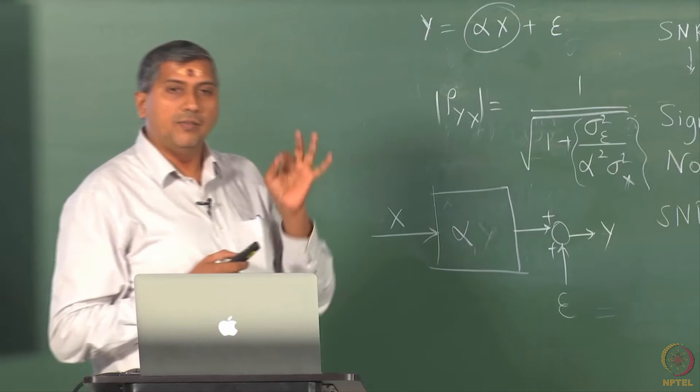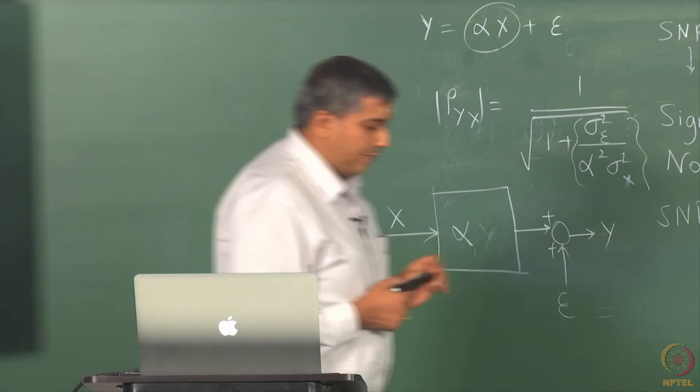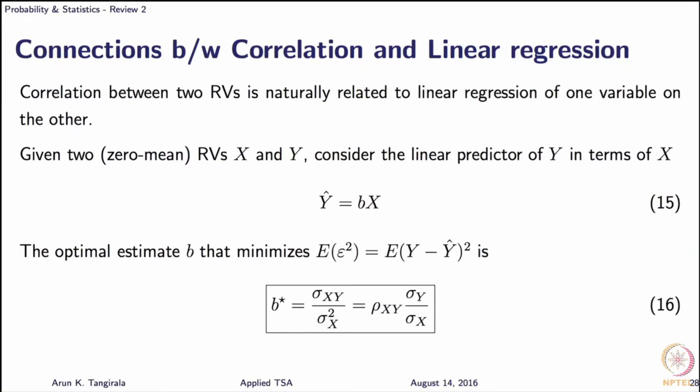Let us now look at this aspect of connections between correlation and linear regression a bit more closely, and we will continue this discussion even tomorrow. Remember I said as far as linear models are concerned, it is sufficient to know the first and second order moments, and here is a very simple example.